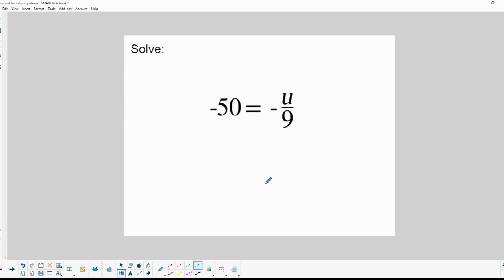Alright, here we have negative 50 equals negative u over 9. Now whenever you have a variable by itself like this, put a 1 in front of it. So in this case we're dividing by negative 9. To solve this, the opposite of dividing by negative 9 is multiplying by negative 9. So we're multiplying by negative 9 over 1. Negative 9 times negative 50 is a positive 450. And these negative 9s cancel each other out. So that just leaves me with what u would have to be in order for this equation to be a true statement. U would have to be 450.